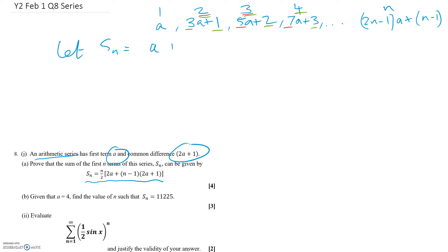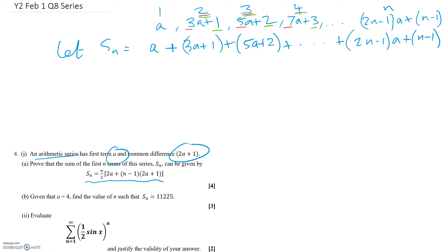So Sn equals a plus (3a+1) plus (5a+2), and so on, all the way up to the nth term which is (2n−1)a plus (n−1).